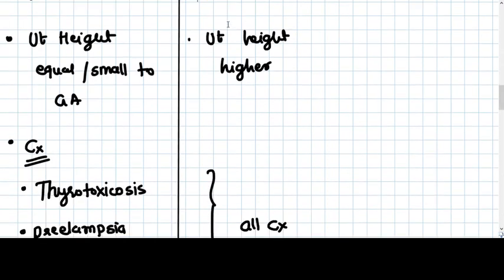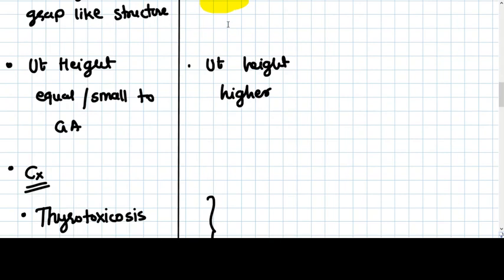The uterine height, because of the grape-like structures in the mass, is more in complete mole. The uterine height will be higher than the gestational age, which is not true with partial mole. It can be equal or even small.